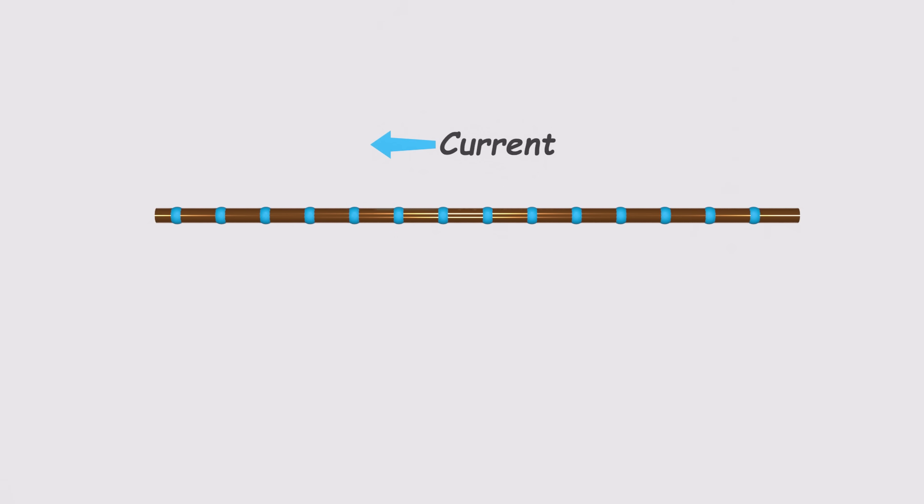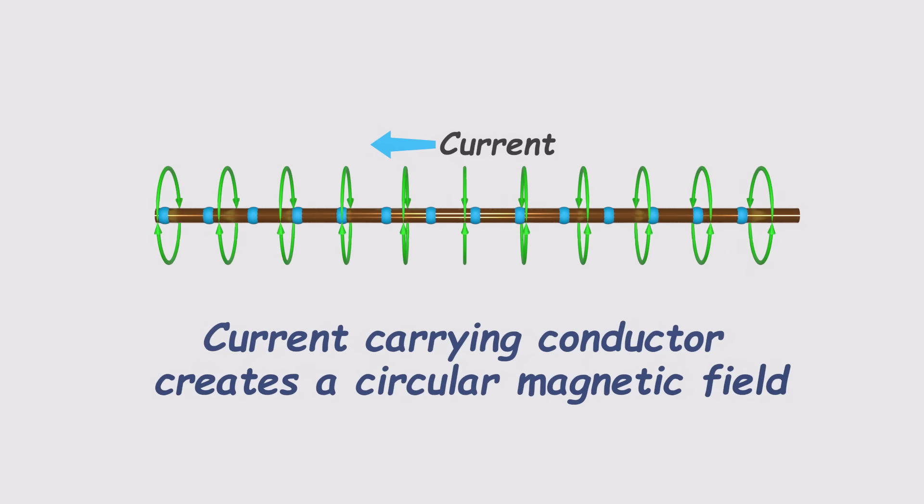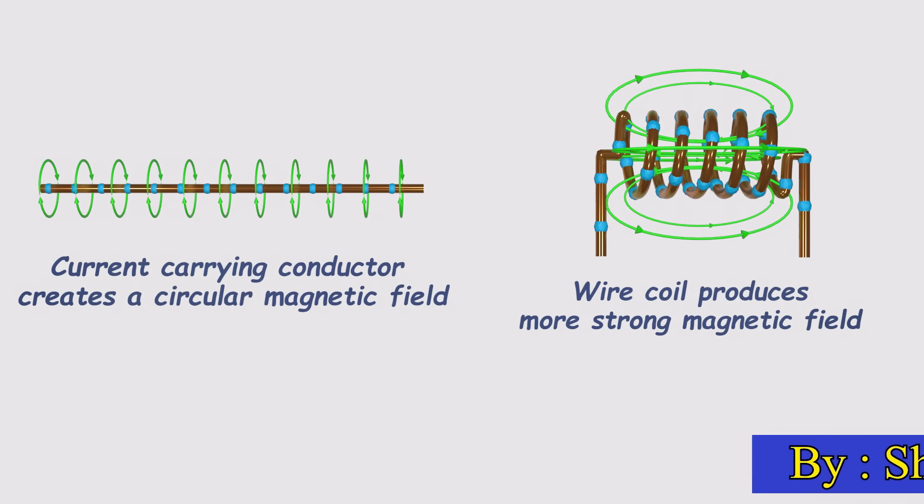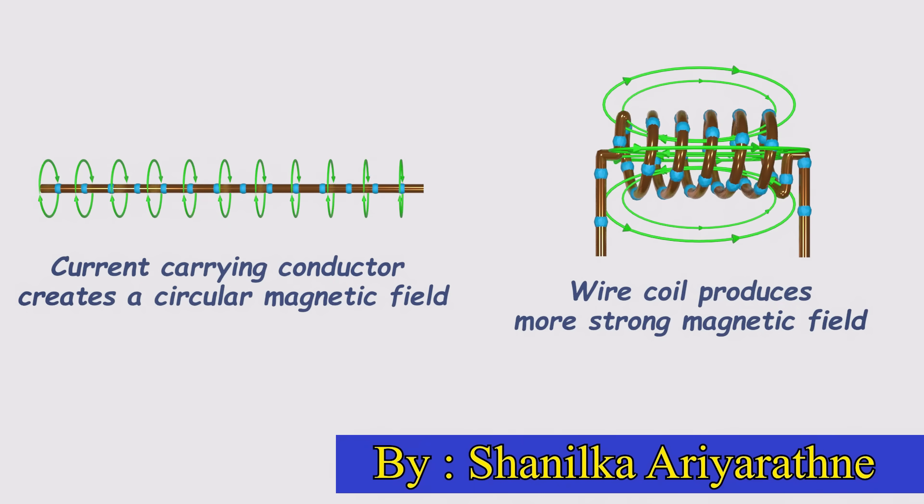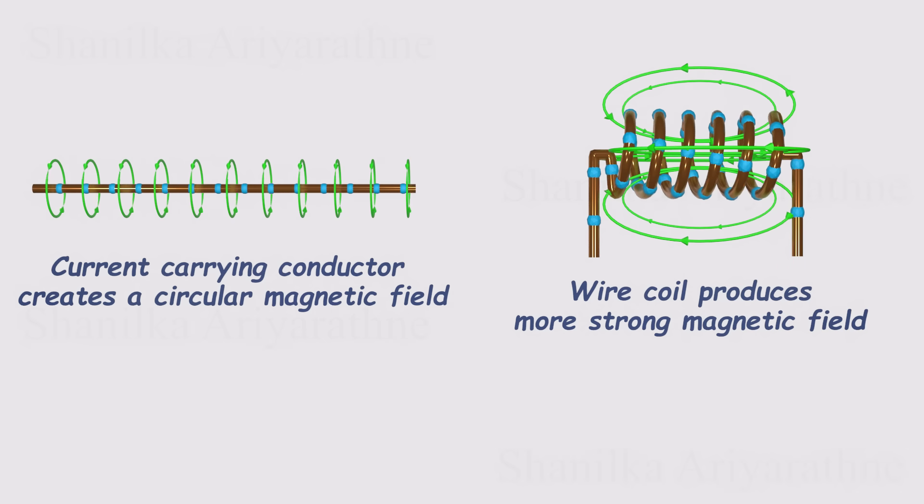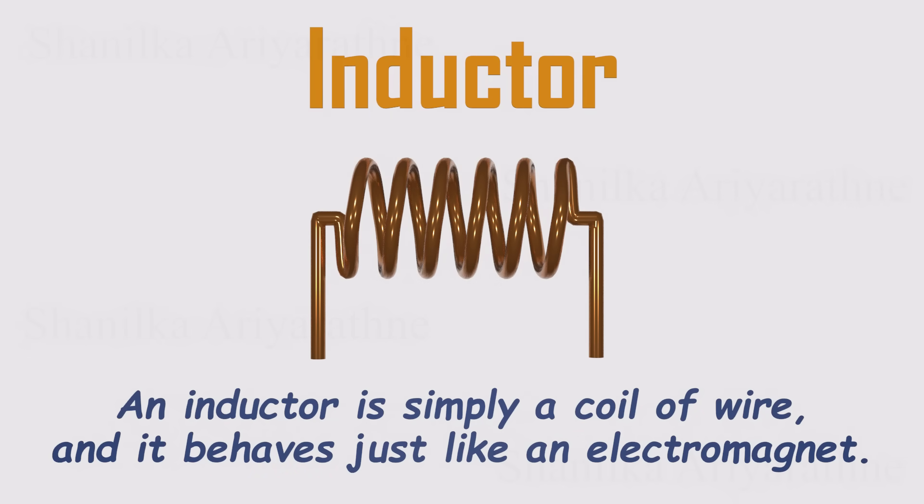Whenever current flows through a wire, it creates a magnetic field around it. But if we want that field to be stronger and more focused, we can coil the wire tightly around a core. That's the simplest form of an inductor, a coil of wire acting like a tiny electromagnet. The core can be made of different materials, sometimes just air, sometimes iron, or other materials that help the inductor perform better.